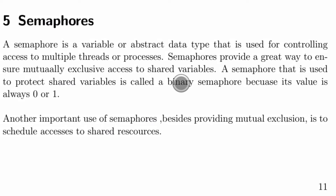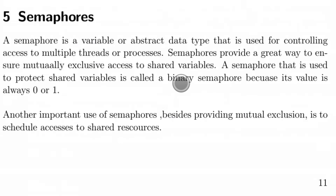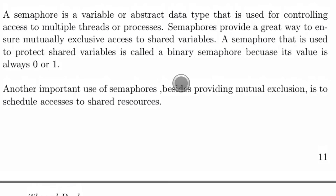A semaphore that is used to protect against shared variables is called a binary semaphore, because its value is 0 or 1. What a semaphore allows you to do is it basically allows you to allow only a set number of threads through. In a Mutex, when you have a lock, you can only allow one thread through. With a semaphore, you can maybe let 10 threads through or a set number.